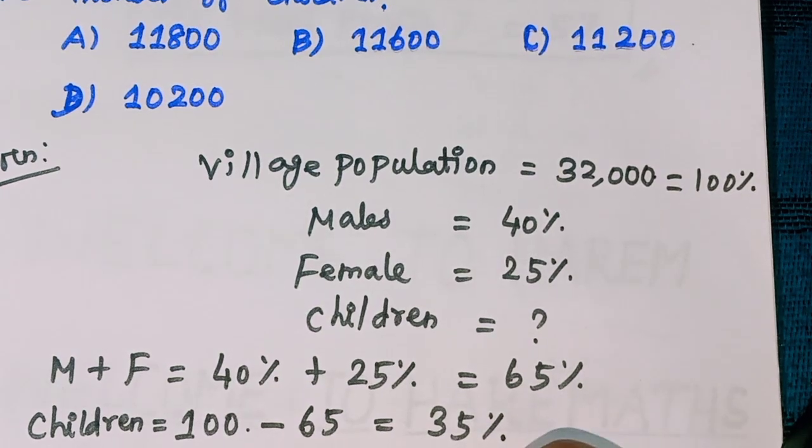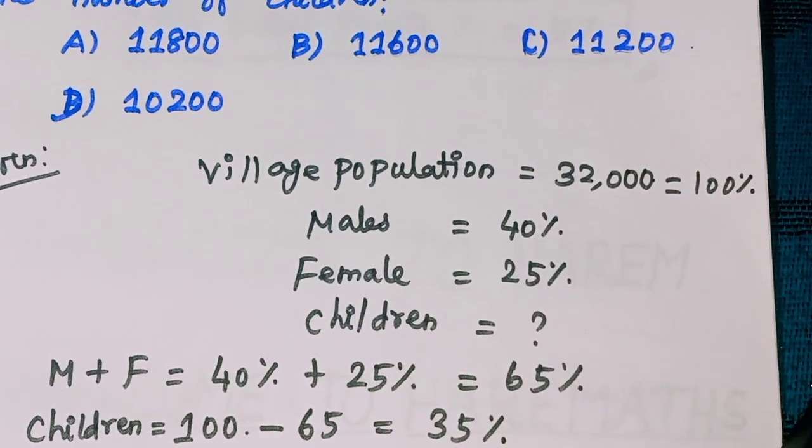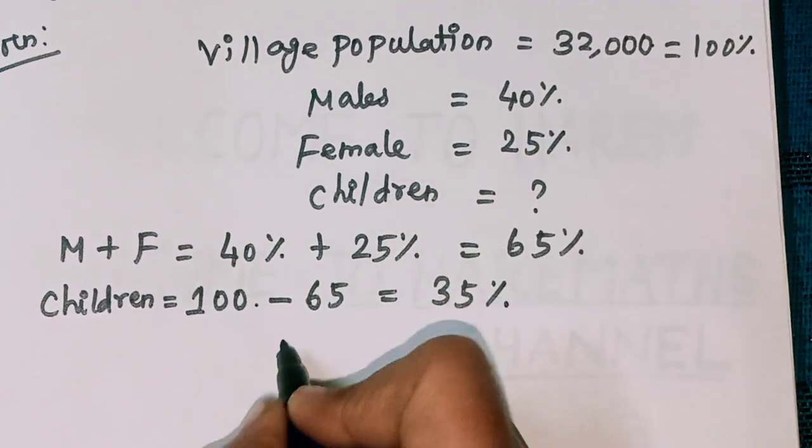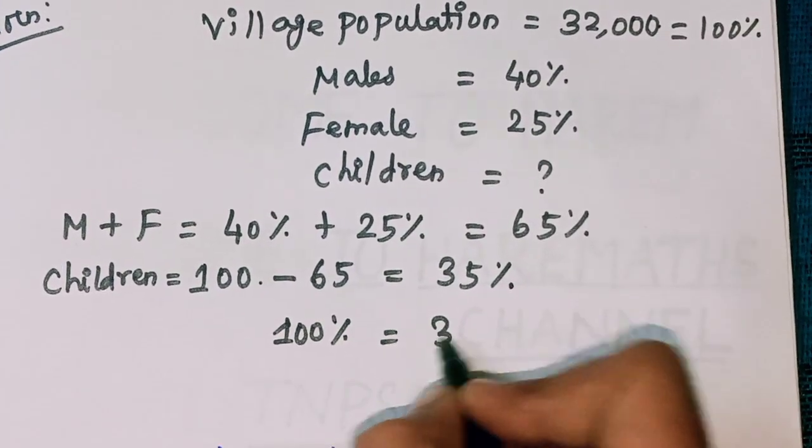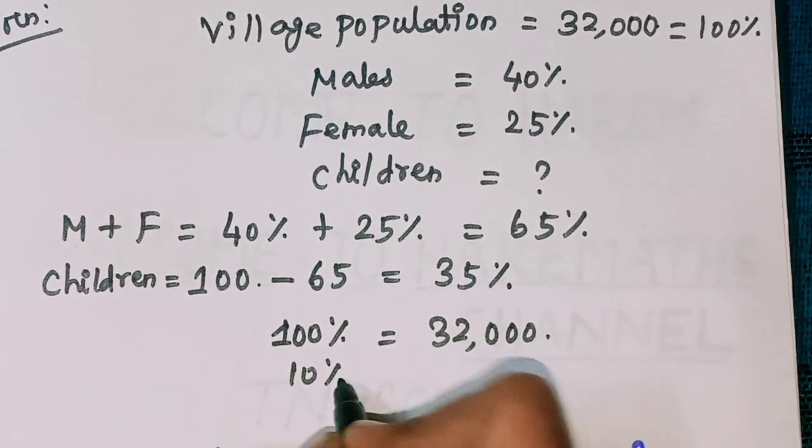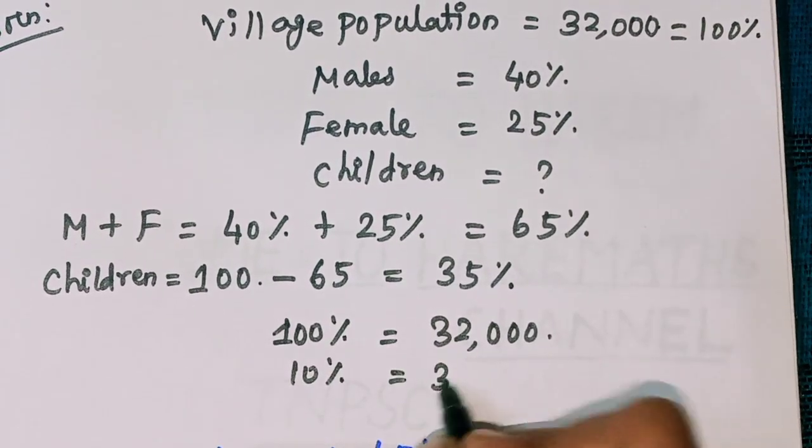So 35%, find out the number of children. 100% equal to 32,000. 10%, first to find out 10%.